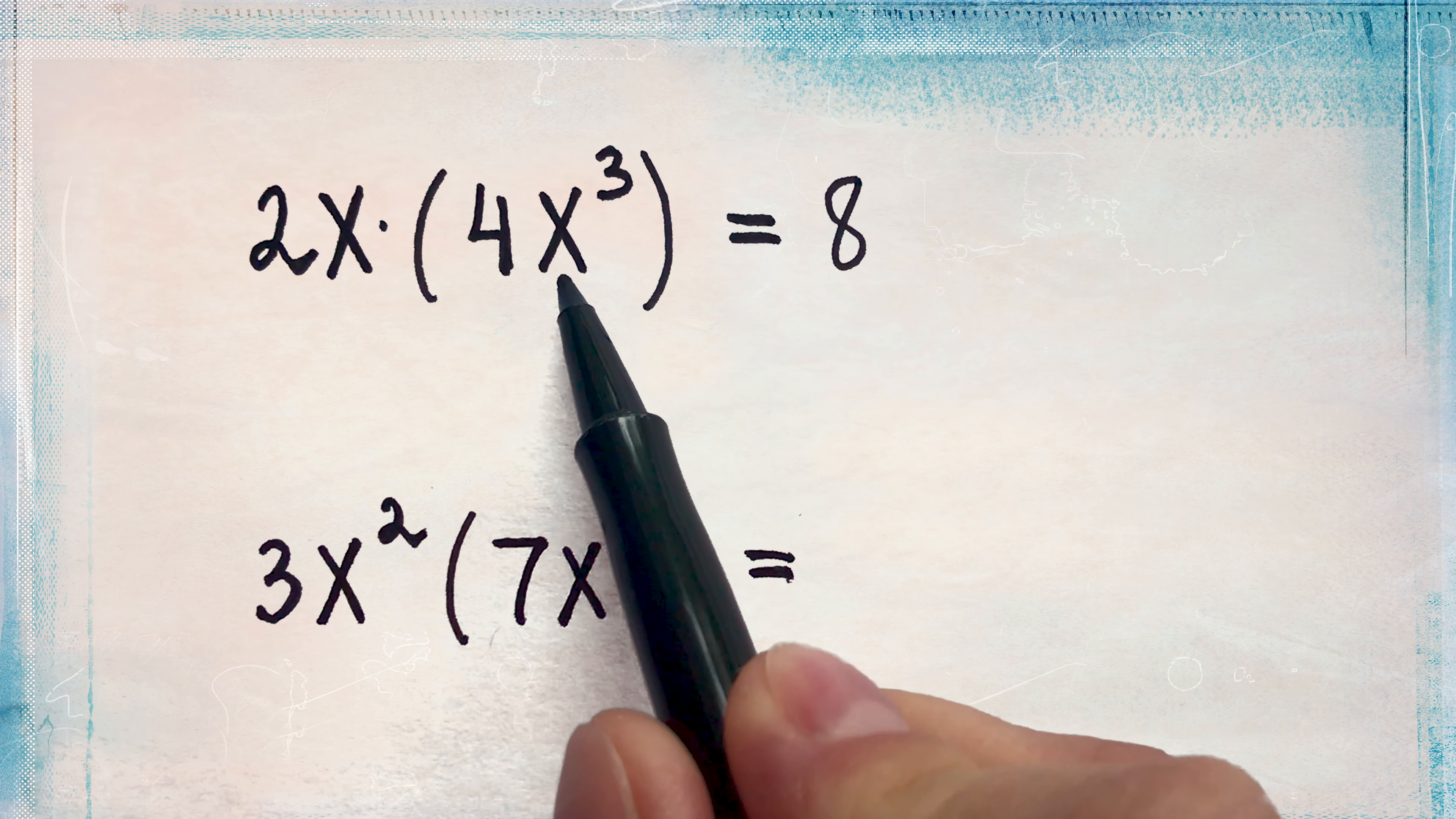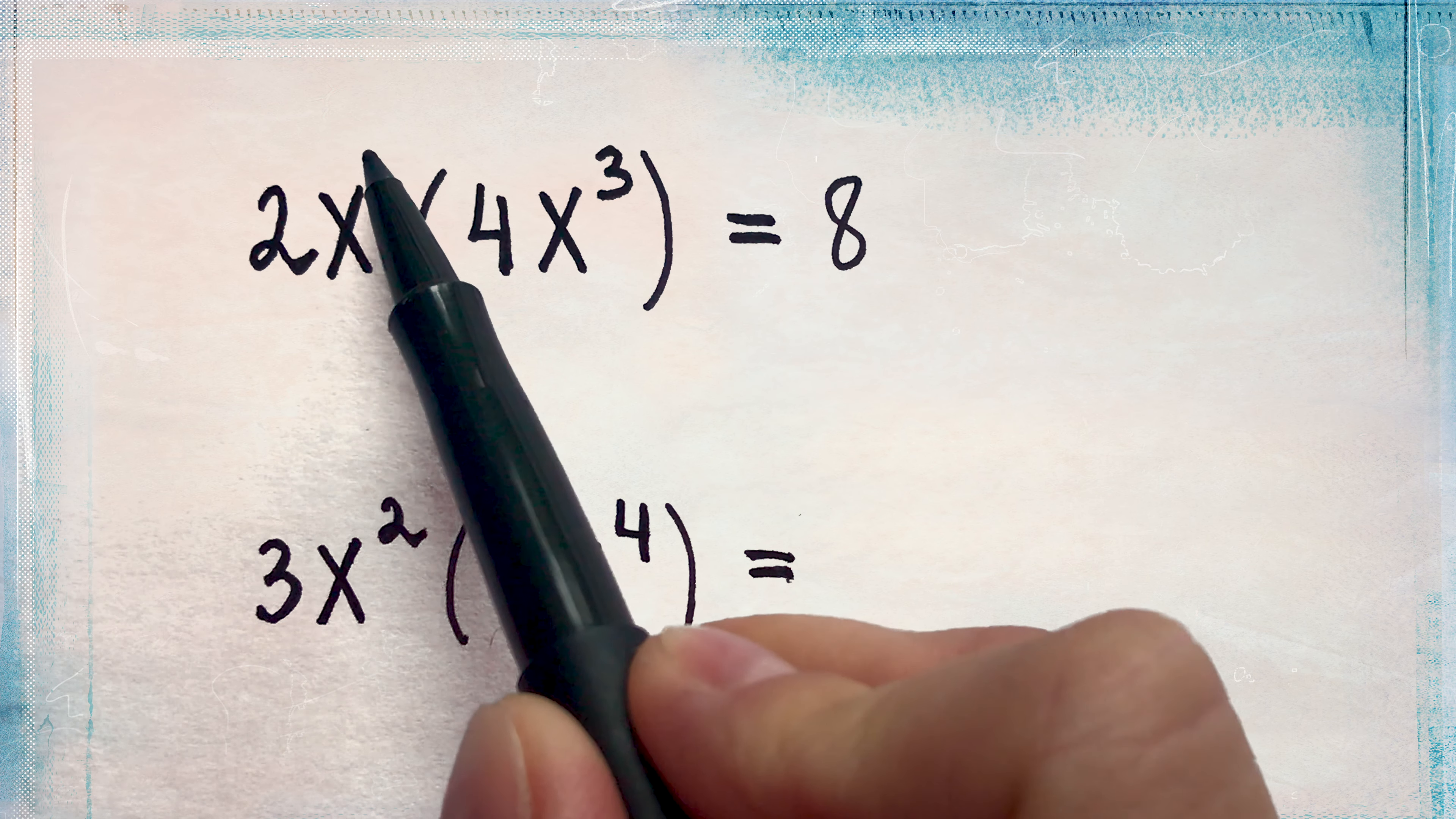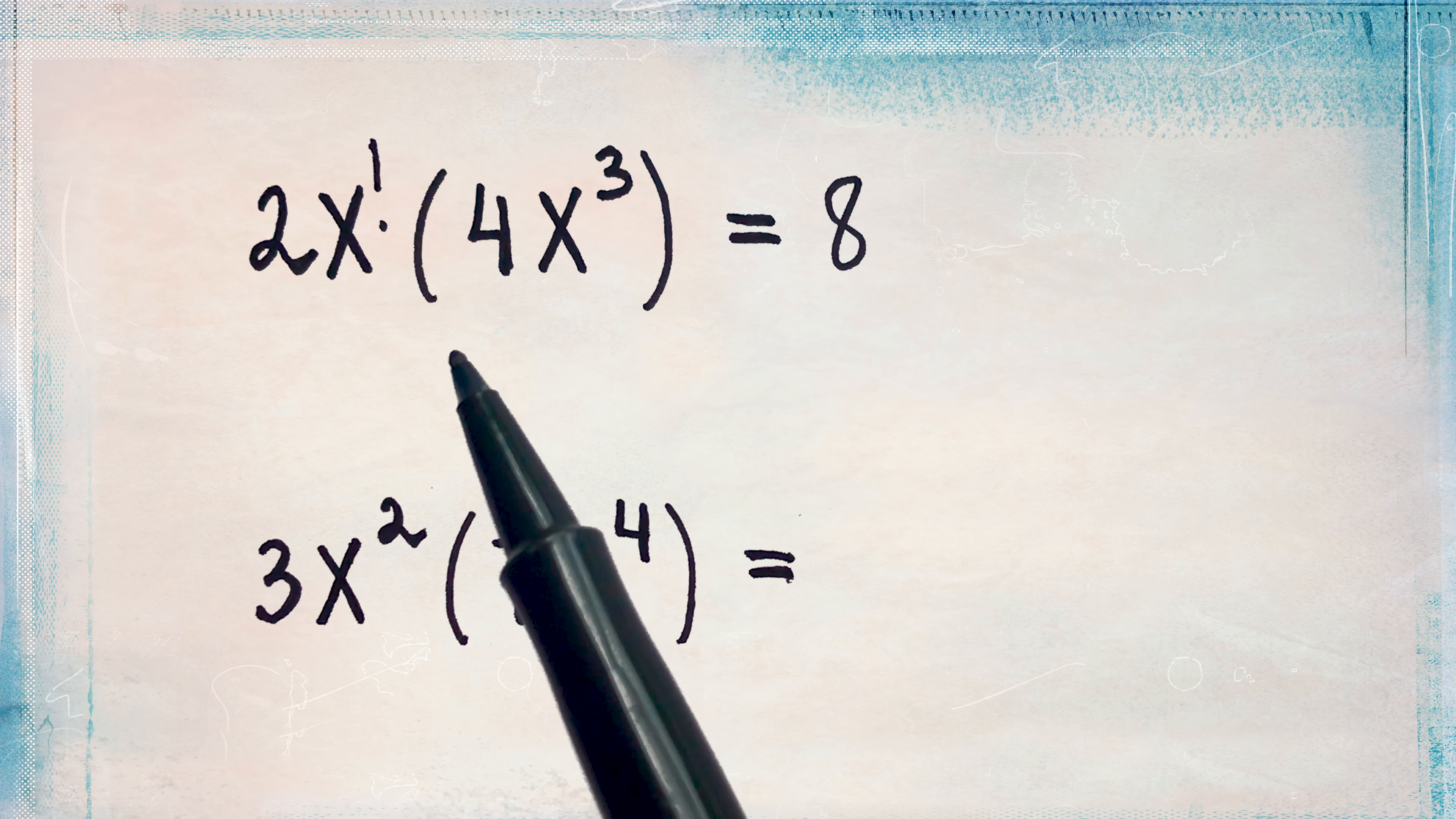Then multiply the variables together. We will multiply the x's together. Here it's just an x. We don't see the exponent here. It means x is raised to the power of 1. So let's put 1 right here.